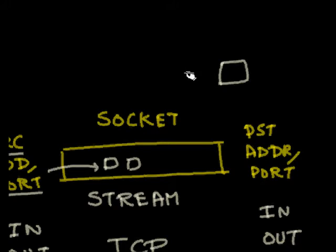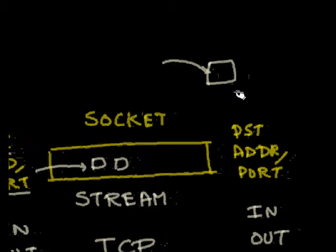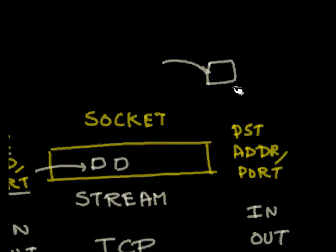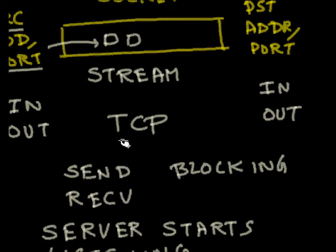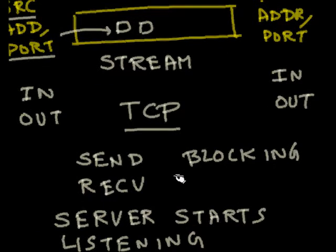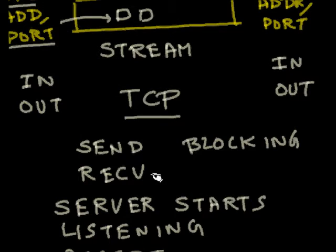On the same computer, many different services or applications are running. The IP address tells you which computer to go to, and the port number tells you which application or process on that computer you want to reach. Now let's look at how you can write Java code to construct a client-server program.